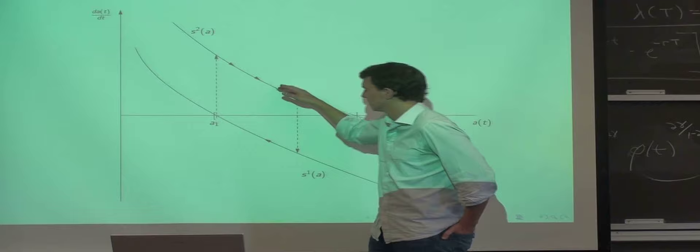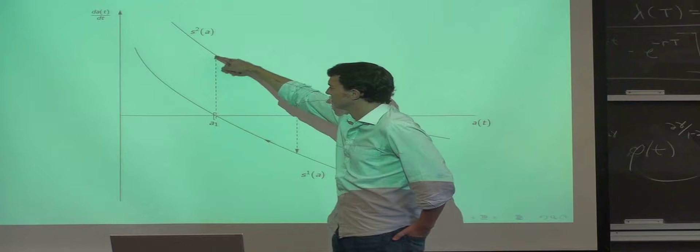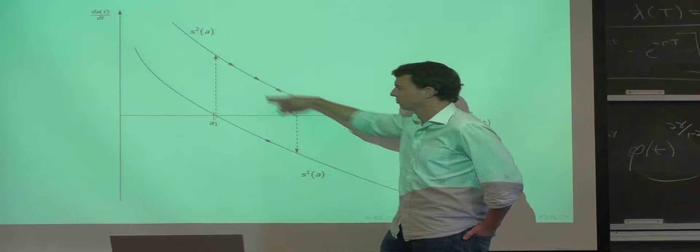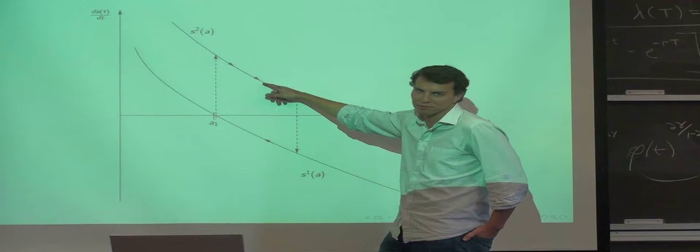Here are the two savings policy functions for the two types. This is the low type, and this is the high type. The low type has a lower target wealth than the high type. So the low type is going to die, and he gets a child, which is the high ability type. For him, the savings policy function is this one right here. He's going to start accumulating towards his target wealth level. And here, say somewhere here, he dies again.